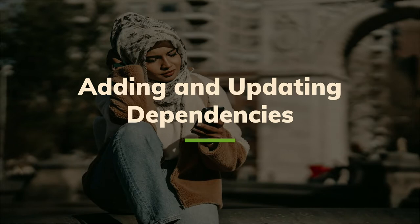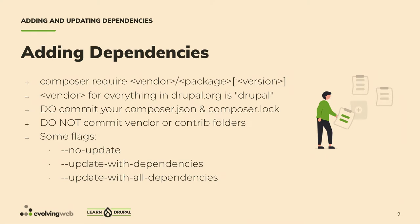Usually that means adding and updating dependencies. To add a dependency, it's as easy as running a composer require command. The package name is composed of the vendor and the package — optionally you can also pass a version or version constraint. For any project hosted on Drupal.org, the vendor will be drupal. Running composer require will make changes in composer.json and composer.lock, and you should commit both files. Avoid committing your vendor and web/modules/contrib folders, since Composer can recreate them.